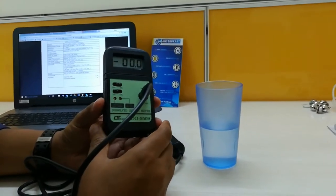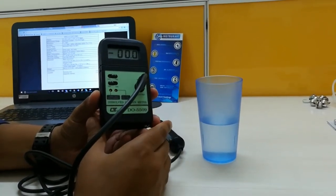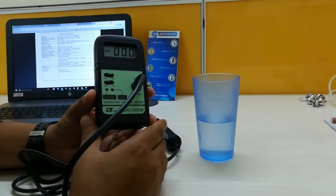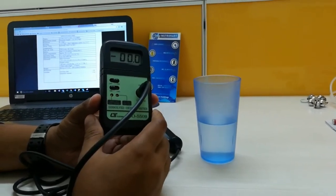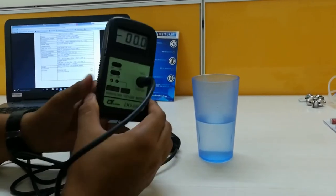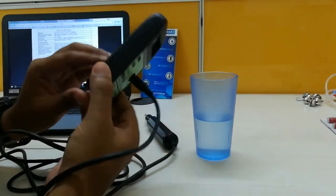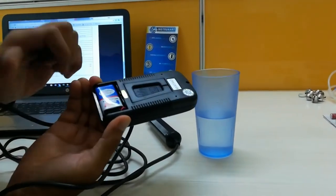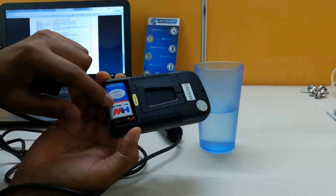Hello, I am going to walk you through the Lutron DO5509 Dissolved Oxygen Meter. This device runs with a 9-volt battery, looks similar to this.